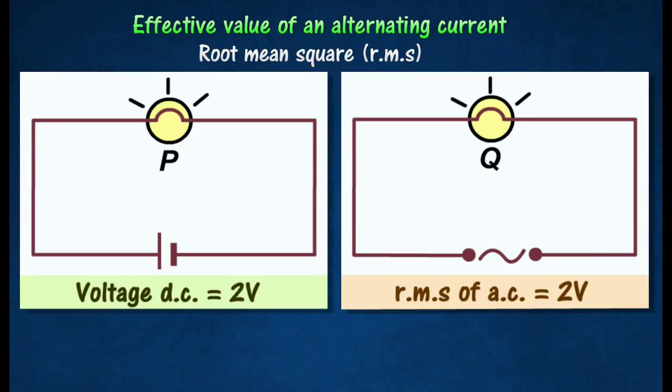Both lamps are of the same brightness. This is because the root mean square voltage of the alternating current is equal in value to the voltage of the direct current.